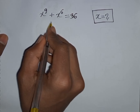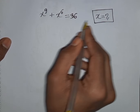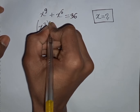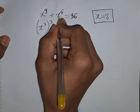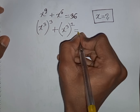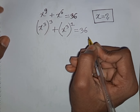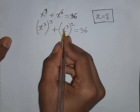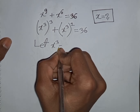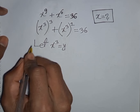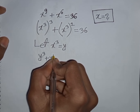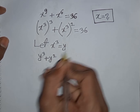How to solve x power 9 plus x power 6 is equal to 36. Find the value of x. We have x power 9 can be written as x power 3, bracket power of 3, then plus x power 6, which is the same as x power 3, bracket power of 2, is equal to 36. We see x power 3 is common in both terms, so let x power 3 be substituted by y. Our equation will be y cube plus y square is equal to 36.